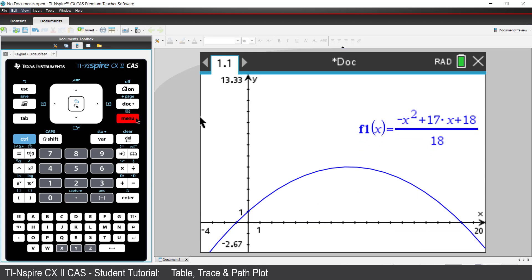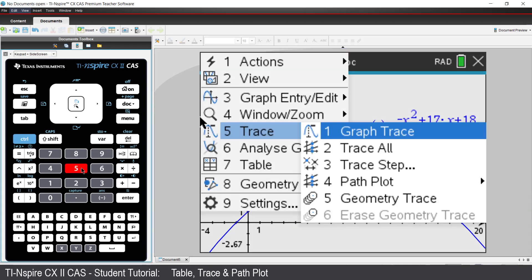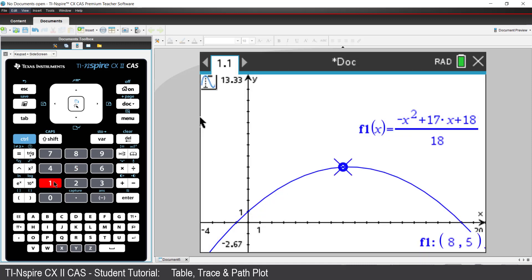I'll use the Trace option again. This time we see key features of the graph appearing automatically. We can see the y-intercept, the maximum, and of course the x-axis intercept or zero.